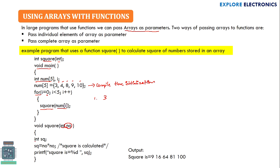We declare a variable int sq (square) to hold the square of the number. The square is calculated by multiplying the number by itself: sq = no * no. Then we print the square using printf, printing 'square =' and the value.